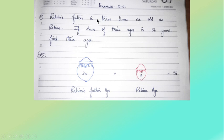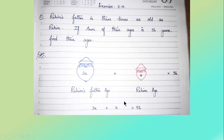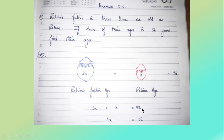Rahim's father is three times as old as Rahim, so father's age is 3x. One more piece of information is given: the sum of their ages is 56 years. Since 'sum' means addition, we use the plus sign: 3x plus x is equal to 56.